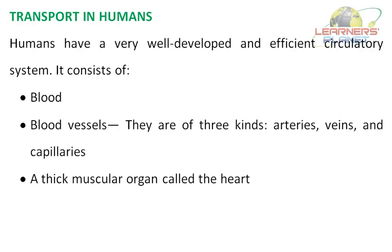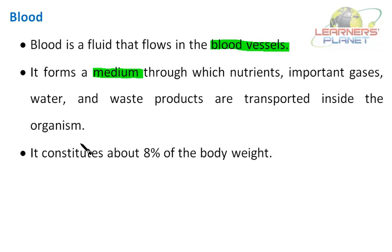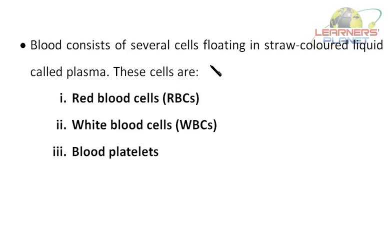Let us now study about blood in detail. Blood is a fluid that flows in blood vessels — arteries, veins, and capillaries. It forms a medium through which nutrients, important gases, water, and waste products are transported inside the organism. It constitutes about 8% of the body weight. Blood consists of several cells floating in a straw-colored liquid called plasma.